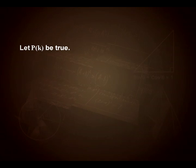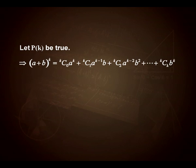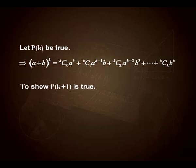Assumption step: let P(k) be true where k is a positive integer. That means (a + b)^k has expansion kC0·a^k + kC1·a^(k−1)·b + kC2·a^(k−2)·b² + ... + kCk·b^k. Keep in mind: the power of a decreases and the power of b increases by 1 in each successive term, and the sum of the powers of a and b always equals the index k. Using this assumption, we now prove the result is true for k+1.